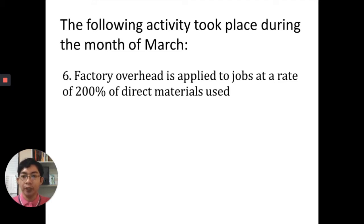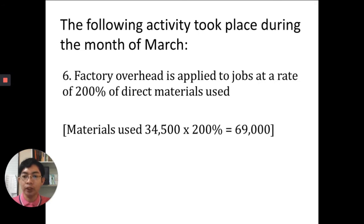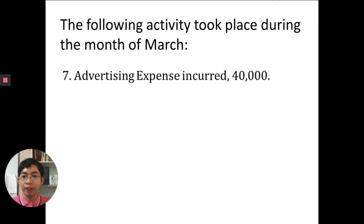Number six: factory overhead is applied to jobs at a rate of 200% of direct materials used. Because it is not yet the end of the period, we do not know the total actual factory overhead, so we estimate it. Materials used is $34,500 times 200%, giving us $69,000. The entry is debit work in process inventory, credit applied factory overhead $69,000. Remember, the normal balance of applied factory overhead is credit.